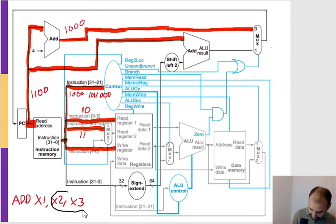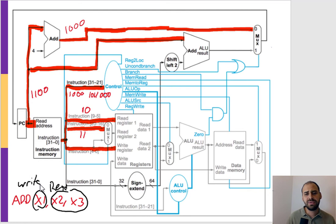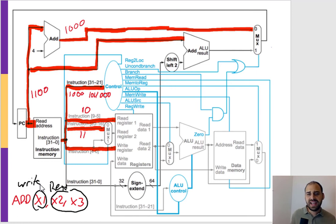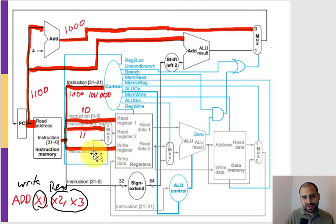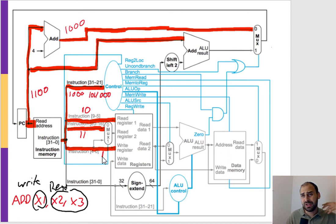We want to remember that we're reading two registers - registers 2 and 3 - and writing to register 1. Always come back to what the instruction does and how that must be supported by the underlying architecture. Notice we're reading register 2, starting to read register 3, and we're going to write to register 1. We can see that bits 0 through 4 represent register 1.